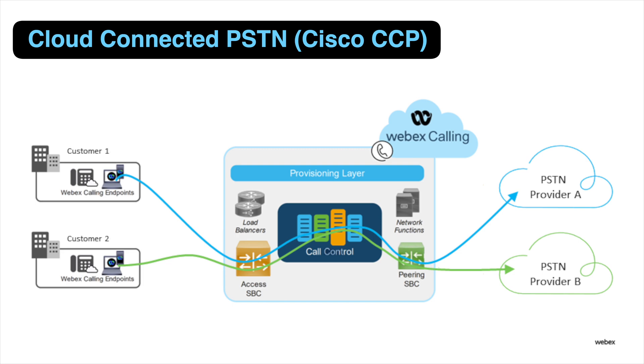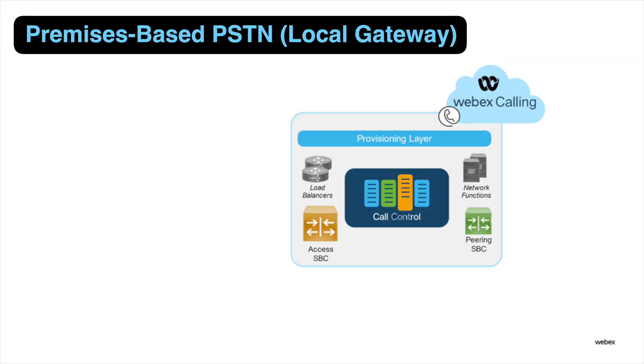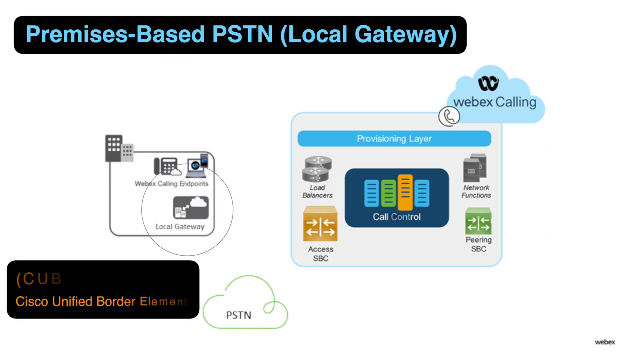With CCP, the PSTN service is decoupled from Cisco's WebEx Calling service — you go directly to the CCP provider and contract directly with them. They provide the SIP trunking service, which allows for direct connection between the PSTN and the peering SBC. With the premise-based PSTN, or local gateway option — which is what we'll use in this calling series — the customer deploys a local gateway on-premise running on a Cisco voice gateway or Cisco Unified Border Element, or CUBE, leveraging existing enterprise PSTN connections to route calls between WebEx Calling and the PSTN.